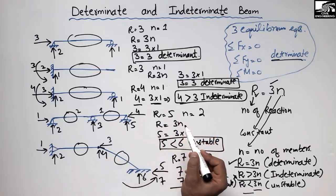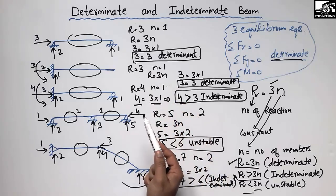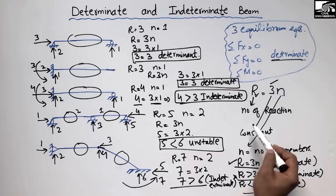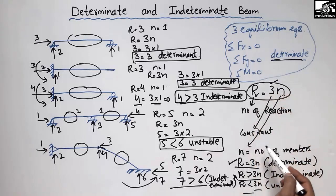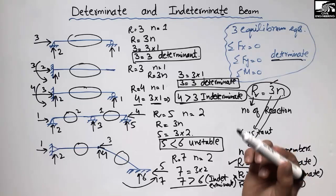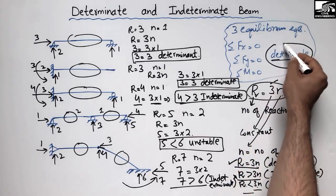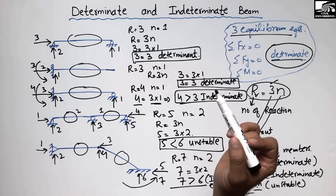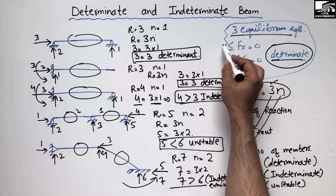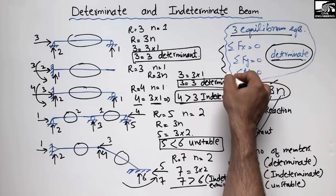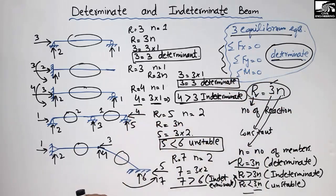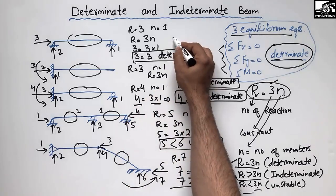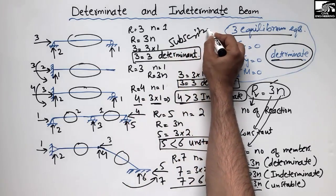I hope you guys understand how to find the determinacy of a beam using the formula R = 3N. If R > 3N it is indeterminate; if R = 3N it is determinate; if R < 3N it is unstable. With a determinate beam we can use the three equilibrium equations to find support reactions and moments, while for indeterminate or unstable cases we must use additional steps. Don't forget to subscribe to our channel for civil engineering videos. Thank you for watching.